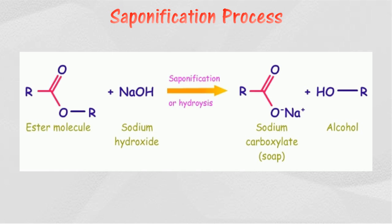The saponification process is a hydrolysis process of ester by alkali. Soap can be prepared by heating fat or oil together with alkali through the saponification process.